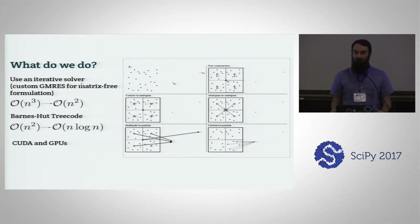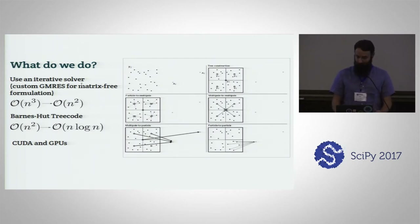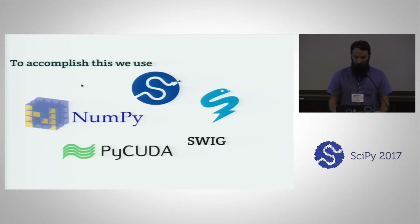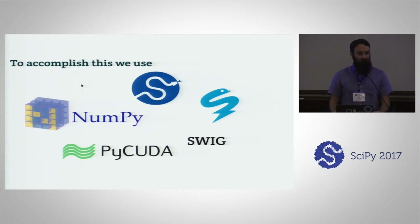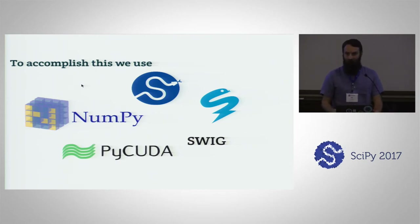We also take the most expensive parts — mostly the particle-to-particle interactions we do compute — and offload them to GPUs, because they're fast. To do all of this, we have a very Python-friendly stack: PyCuda to target the GPUs, NumPy and SciPy. Originally we used Swig for leftover C++ components, but those are being phased out in favor of Numba.